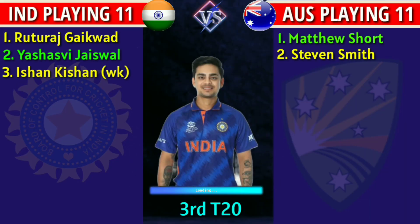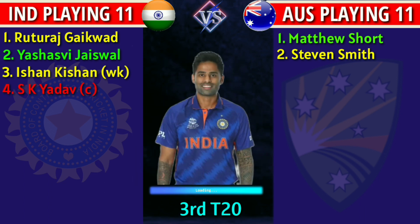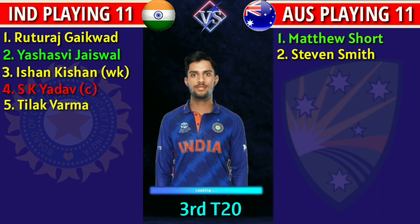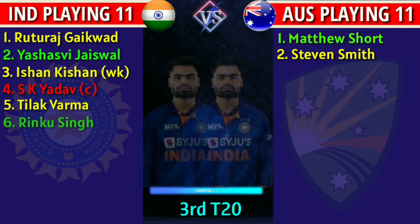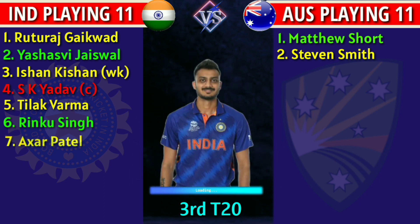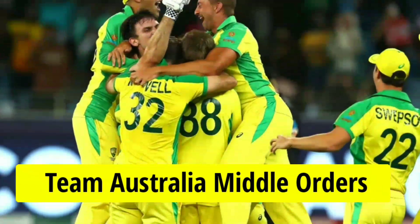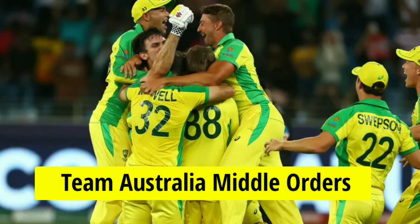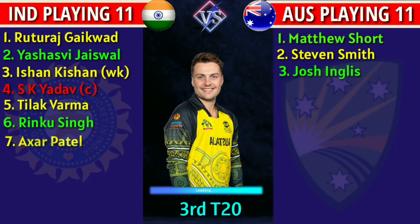Team India middle order: 3. Ishan Kishan, left-handed wicketkeeper batsman. 4. Suryakumar Yadav, captain and right-handed batsman. 5. Tilak Verma, left-handed batsman. 6. Rinku Singh, left-handed batsman. 7. Axar Patel, all-rounder.